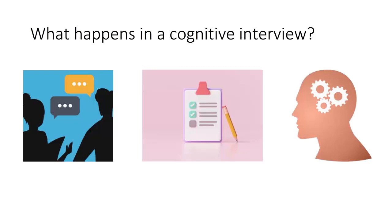Participants are asked the survey questions or survey materials to be tested in an environment that best mirrors how they would be asked in a real-life setting. For example, if the survey is meant to be administered by an interviewer in a face-to-face setting, the interviewer will read the questions aloud to the participant. However, if the survey is meant to be self-completed, the participant will complete the survey without the interviewer reading aloud or providing any assistance. When the participant is answering the survey questions, in a cognitive interview we are more interested in the mental processes used to come up with the answer, rather than the actual answer itself.